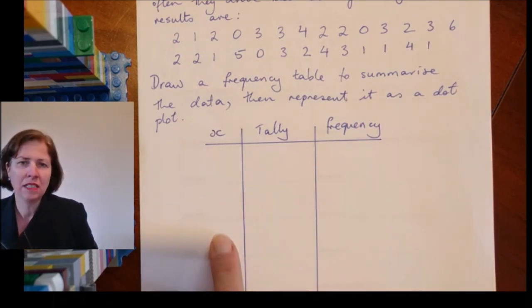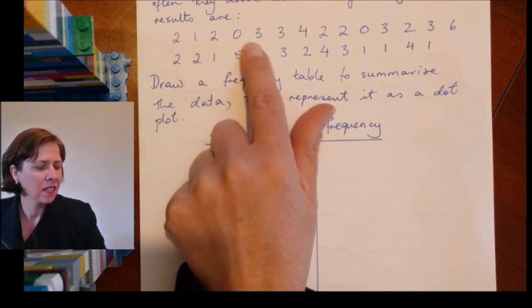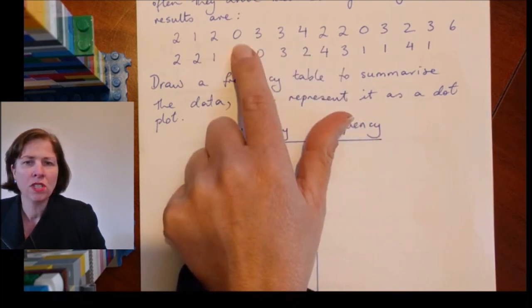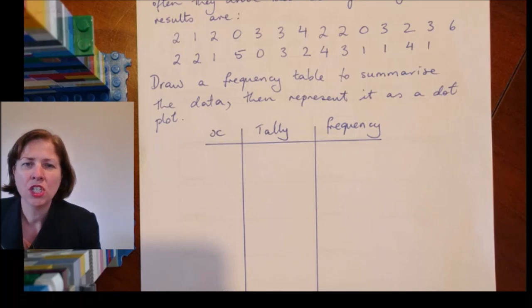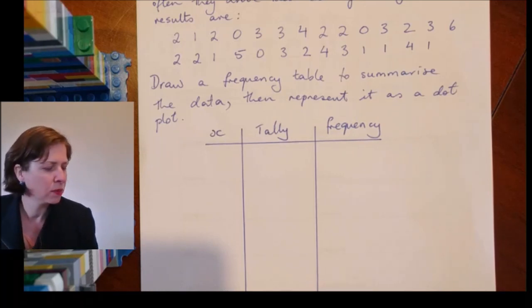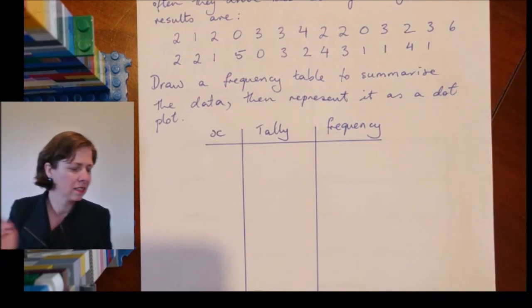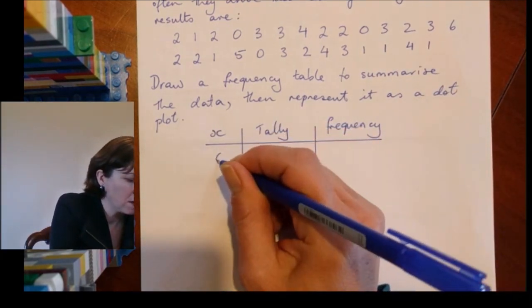First I need to think about what numbers go in here. If I scan the data, I can see that I've got zeros and ones, they're all whole numbers. I don't have anything with two digits, so it doesn't go up to 10. In fact, the biggest number I can see is six.